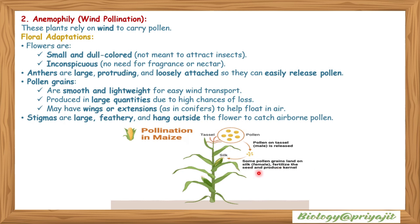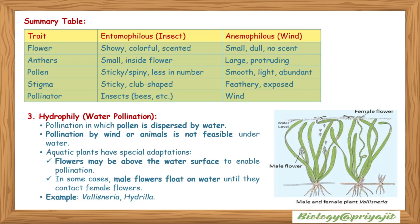An example of wind pollination is maize, where pollen is released from the tassel and some pollen grains land on the silk or female part to fertilize the seed and produce the kernel. Summary comparison: entomophilic flowers are showy, colorful, and scented; anemophilic flowers are small, dull, and have no scent. In entomophilic flowers, anthers are small and inside the flower; in anemophilic flowers, anthers are large and protruding.